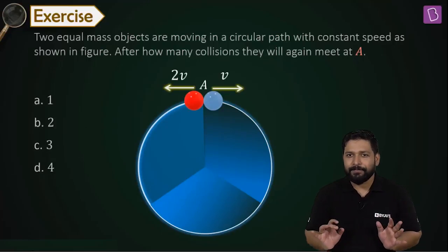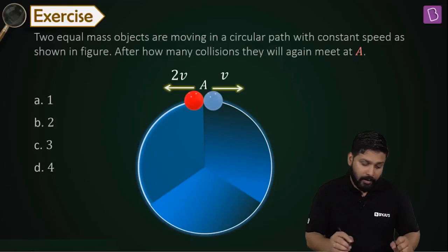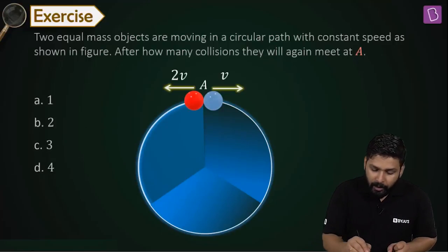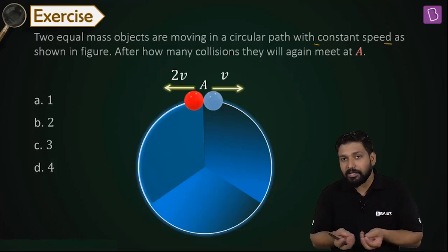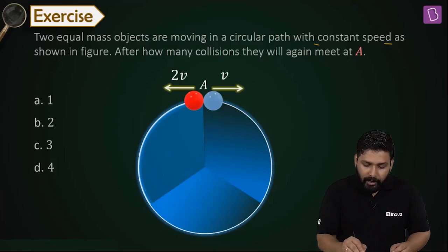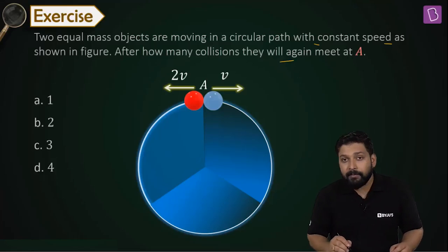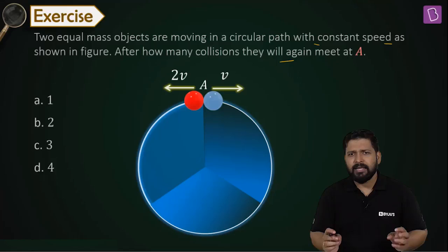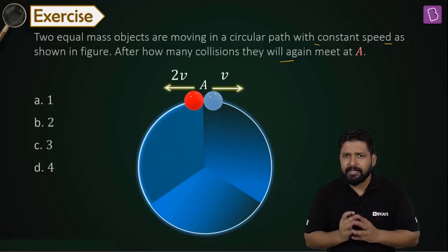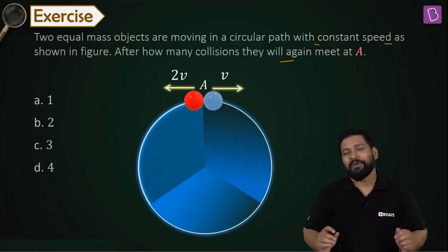The question is very simple. It says that two equal mass objects are moving in a circular path with constant speeds. The speed is not changing while they're moving. How many collisions will happen till they meet again? Consider that nothing is given, so it's all frictionless. The collision is elastic and the masses are equal. One is moving with 2V and another one is moving with V.